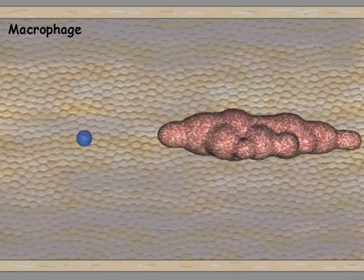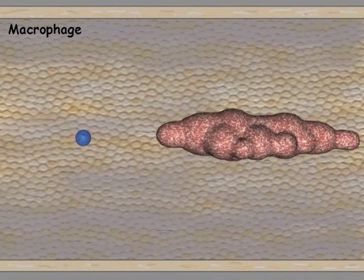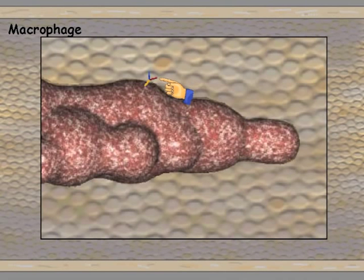Sooner or later, a macrophage comes upon a virus with a foreign marker or antibody. It immediately absorbs it and places a piece of the virus with its marker on its outer surface.